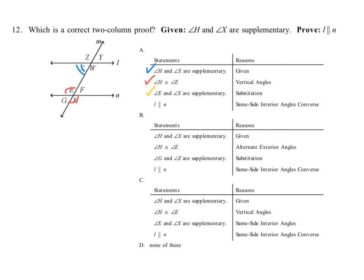Now we've got angle E and angle X being supplementary. The only way those same-side interior angles can be supplementary is if the lines are parallel. Normally the same-side interior angles theorem says the lines are parallel, therefore same-side interior angles are supplementary. If you're going backwards to prove the lines parallel, you're using the converse of that theorem — if we know these two are supplementary, then we can prove the lines are parallel.